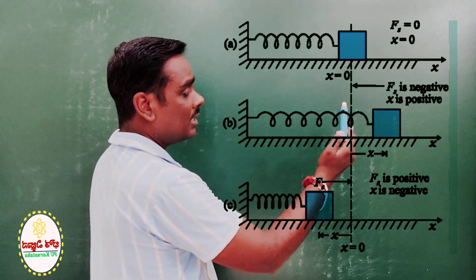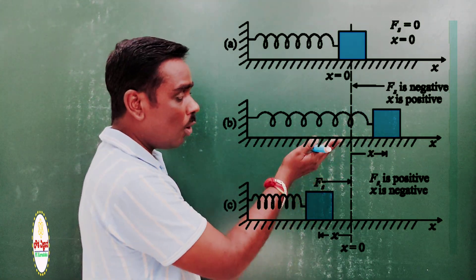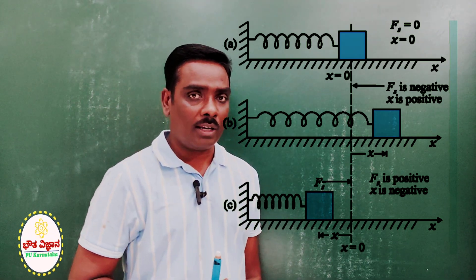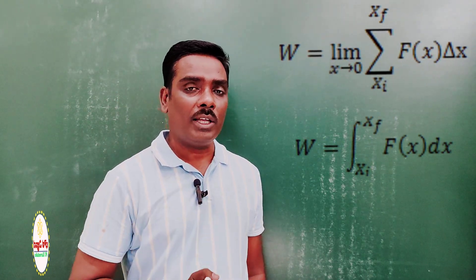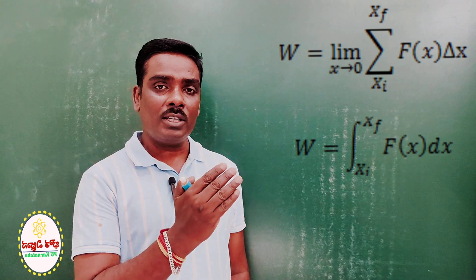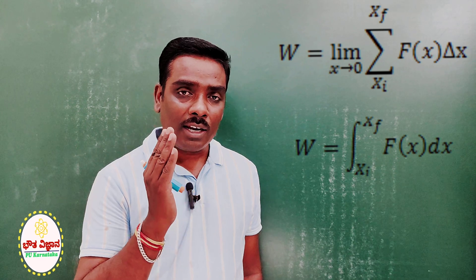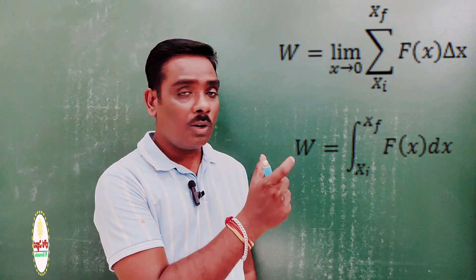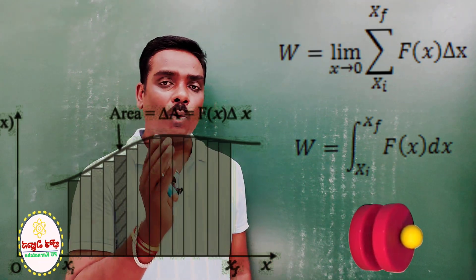How much work is done by the external force to compress or extend the spring? There is force and displacement involved, but in this case the force is not constant — the force is a variable force. Spring force is variable. Therefore, we need to calculate the work done by a very small quasi-static motion, and we need to calculate the formula for variable force.